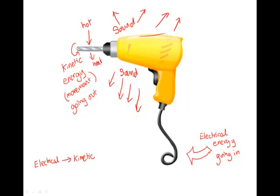Now if we looked at the drill bit, the bit that spins round, that gets hot. And the motor, that gets hot. So some of the electrical energy is converted into heat, which is wasted energy because we don't really want that.